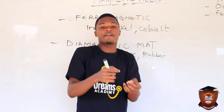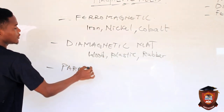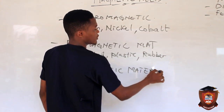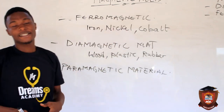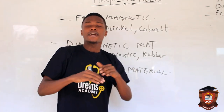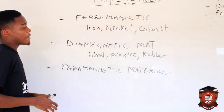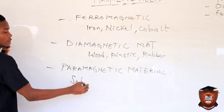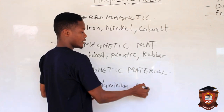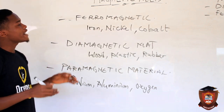Finally, paramagnetic materials are materials that are in between ferromagnetic and diamagnetic materials — they are not strongly attracted by a magnetic field; they are at the middle. Examples of paramagnetic materials include sodium, aluminium, and oxygen.